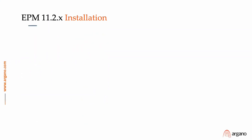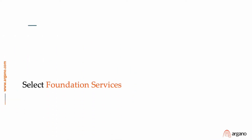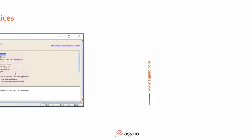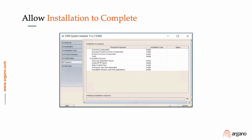We begin with the installation of 1127 Foundation Services. We select Foundation Services from the Oracle EPM 1127 software installation, then allow the installation to complete with Foundation Services binaries being installed.